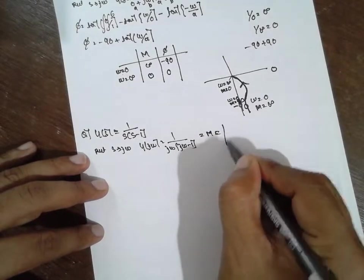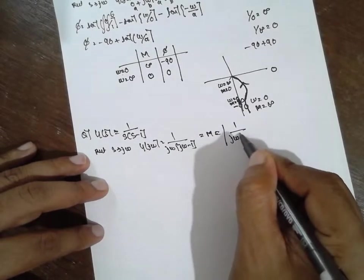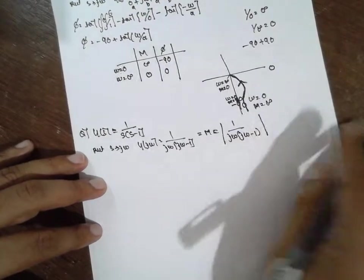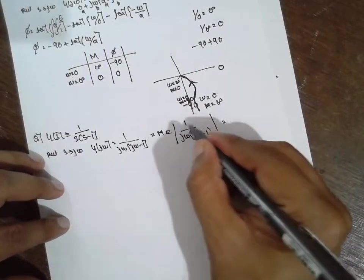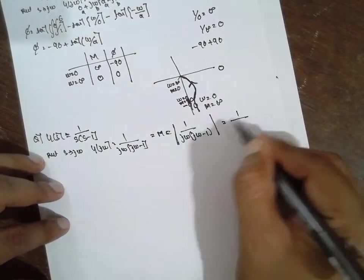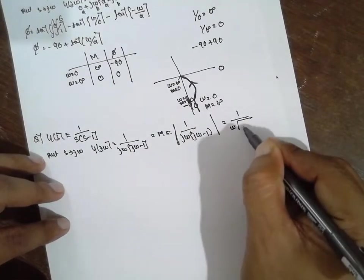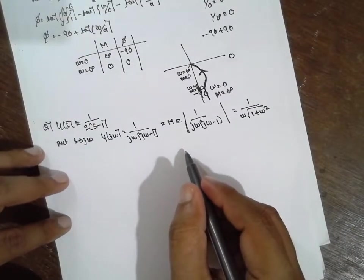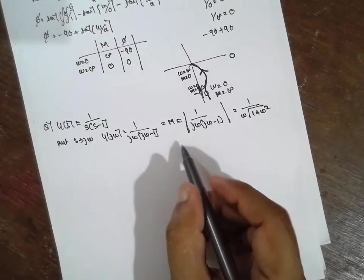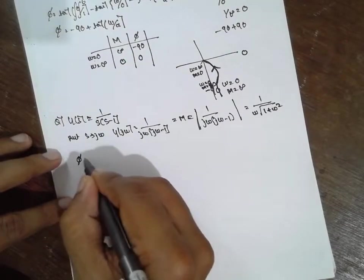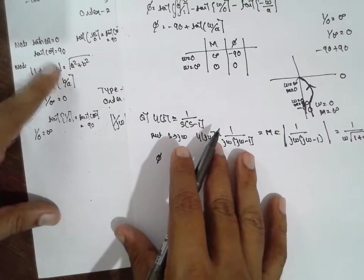Magnitude: modulus of 1 is 1 divided by modulus of jω times modulus of (jω minus 1). The magnitude of jω is ω. And (jω minus 1) becomes root(1 plus ω²). So magnitude equals 1 divided by ω times root(1 plus ω²).